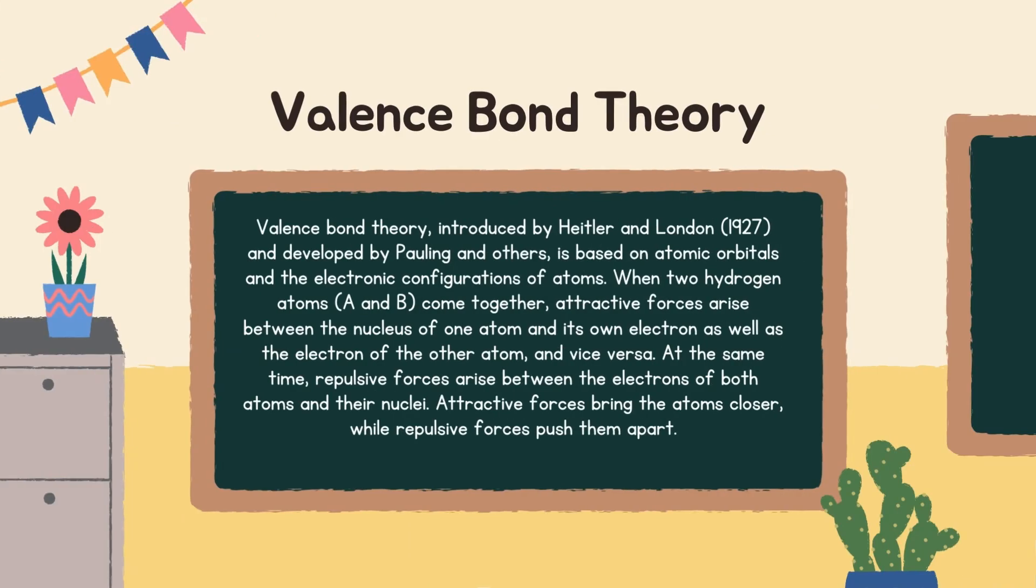Valence bond theory. Valence bond theory introduced by Heitler and London 1927 and developed by Pauling and others is based on atomic orbitals and the electronic configurations of atoms. When two hydrogen atoms A and B come together, attractive forces arise between the nucleus of one atom and its own electron as well as the electron of the other atom and vice versa. At the same time, repulsive forces arise between the electrons of both atoms and their nuclei. Attractive forces bring the atoms closer while repulsive forces push them apart.